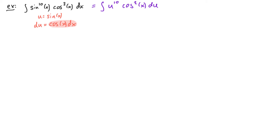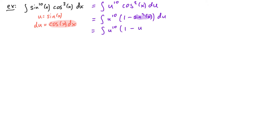When we do integration by substitution we want to replace all of the x's with u's — this is where our trig identity will come in. I know that cosine squared of x plus sine squared of x is equal to 1, so I can rewrite cosine squared of x in terms of sine of x. We can think about this as the integral of u to the tenth power times one minus sine squared of x du. Now the sine of x in here is just u, so I can write this as u to the tenth power times one minus u squared du. I've now rewritten my entire integral in terms of u's and du.